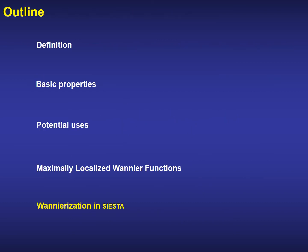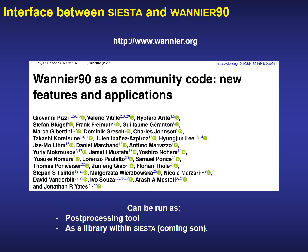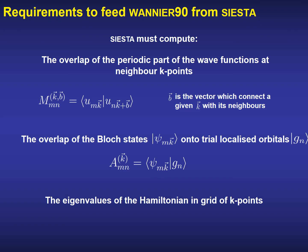Finally, how is the Wannierization done in SIESTA? We have implemented an interface between SIESTA and the Wannier90 code. Right now, Wannier90 can be run as a post-processing tool, but very soon its use as a library within SIESTA will be available in the master branch. In order to minimize the spread and produce the maximally localized Wannier functions, Wannier90 requires some matrices that must be computed in SIESTA: the overlap of the periodic part of the wave functions at neighboring k-points, the overlap of the Bloch states onto a trial set of localized orbitals used as a starting point for the minimization procedure, and the eigenvalues of the Hamiltonian on a grid of k-points.